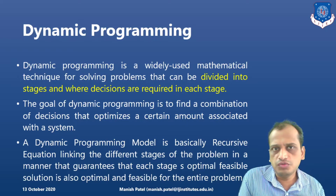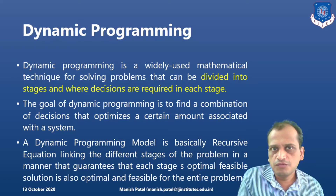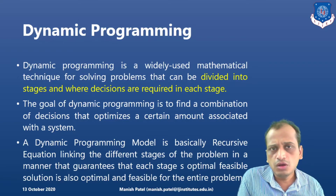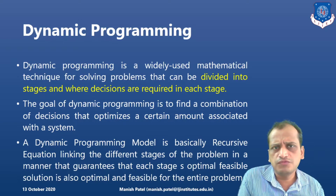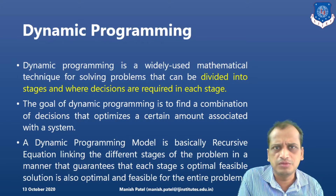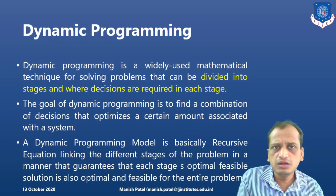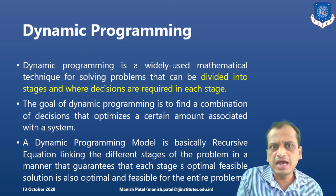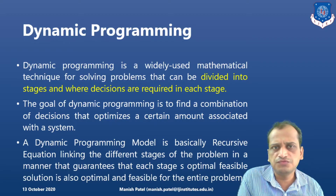The whole problem is divided into different stages, and for each stage we find the optimal solution. The goal of dynamic programming is to find the optimal solution for the entire problem by dividing it into different stages. The nature is of recursive equations, meaning that the feasible optimal solution for each stage will guarantee that you get the feasible optimal solution for the entire problem.